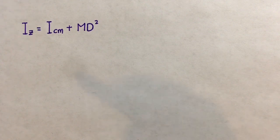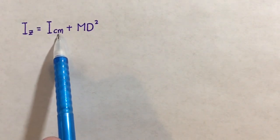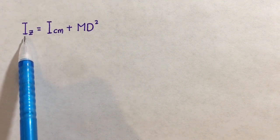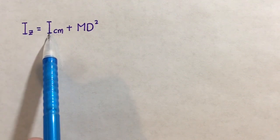The parallel axis theorem says that if we already know the moment of inertia about the center of mass for a particular object, then we can find the new moment of inertia if we spin that object around a different axis, provided that the new axis is parallel to the original one.